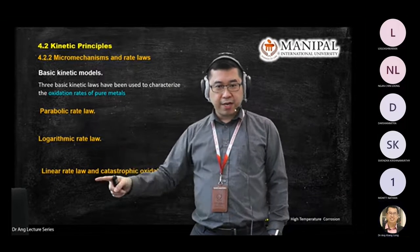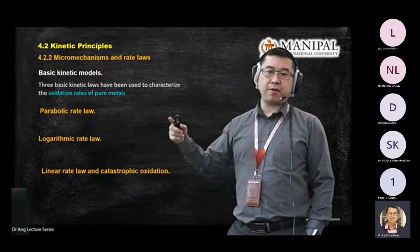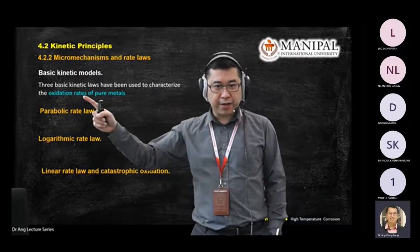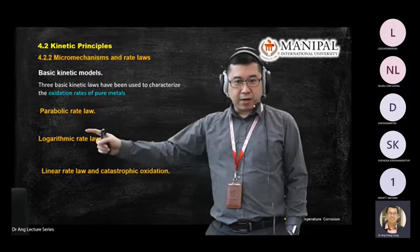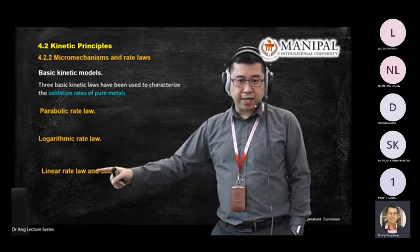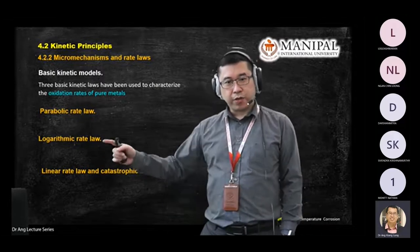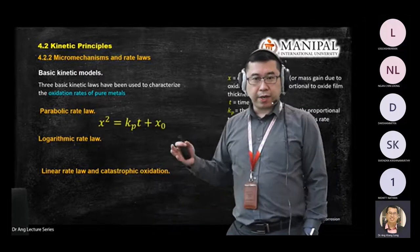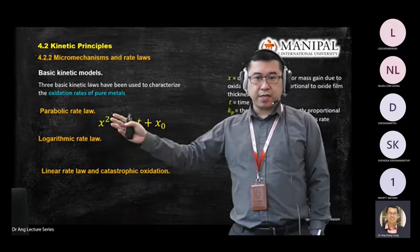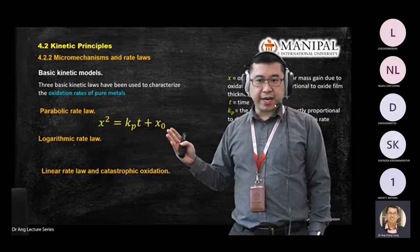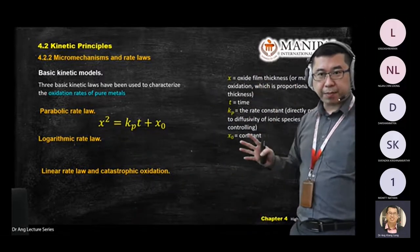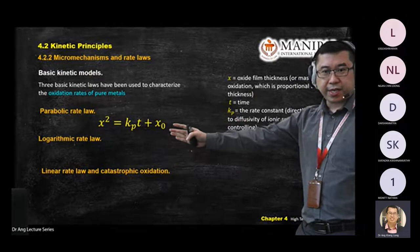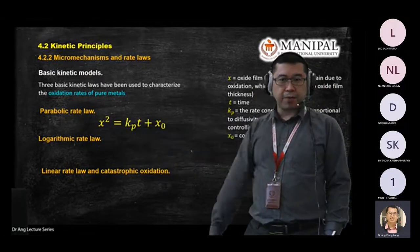We have three types of equations here, or we call them laws. First is the parabolic rate law, then the log rate law, and the linear law. For the first type, you see the equation with x squared, kp, t, and x₀. These are all the parameters — we talk about how the oxidation rates are calculated using the parabolic law.